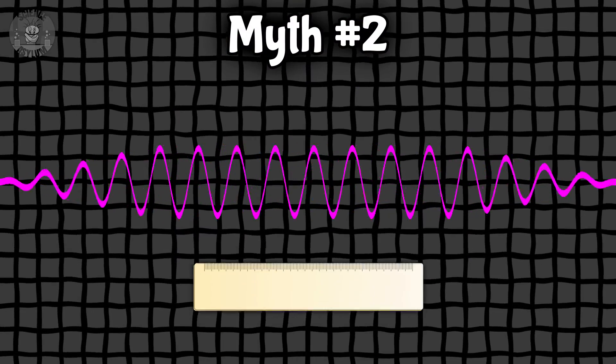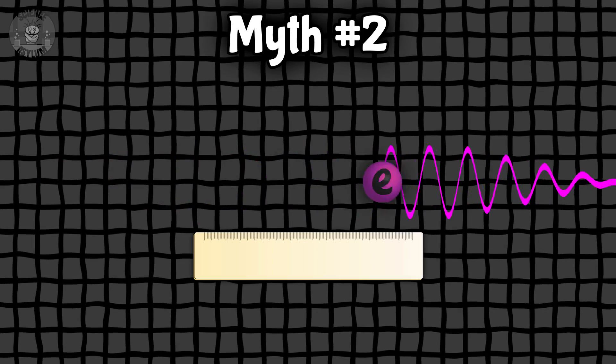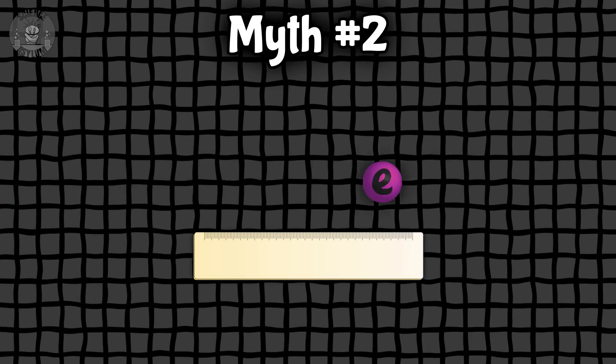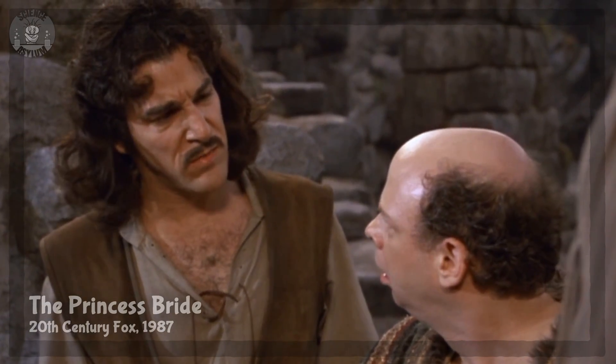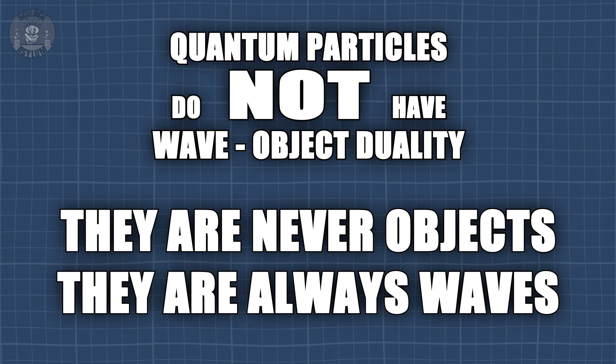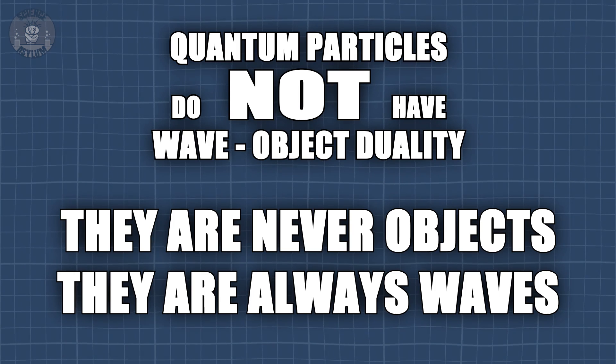Myth number two: when particles are measured, they stop obeying quantum mechanics and start obeying classical mechanics. No. While it is true that a wave function collapses after a measurement, you're misinterpreting the word 'collapse.' I can address this by expounding on something I said during the last myth: quantum particles are never objects — they are always waves, so they're always governed by quantum mechanics.